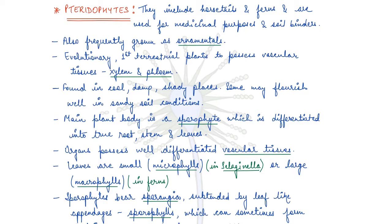Pteridophytes are found in cool, damp, shady places, and some may also flourish well in sandy soil conditions. The plant body is a sporophyte which is differentiated into true root, stem and leaves. As we saw in bryophytes, they lack true root, stem and leaf system — but here pteridophytes consist of true root, stem and leaves. The organs also possess well-differentiated vascular tissues, xylem and phloem.